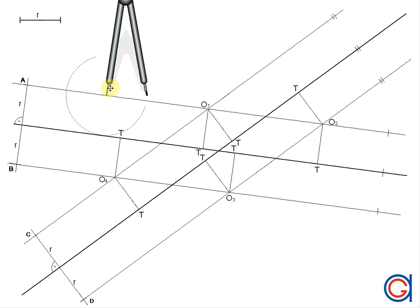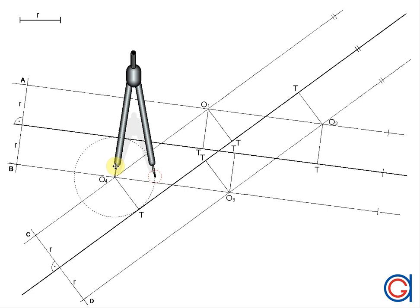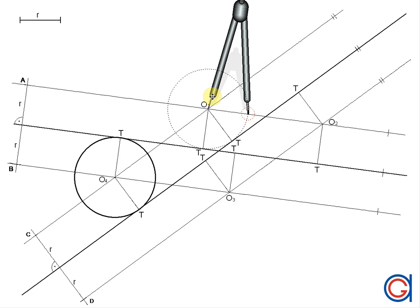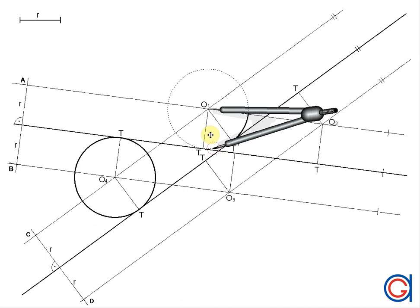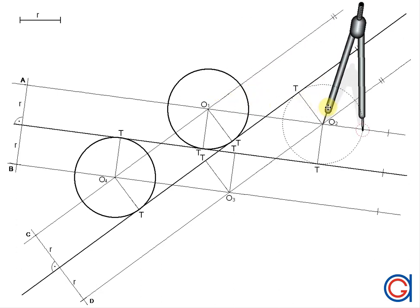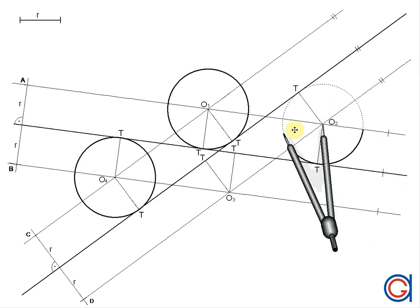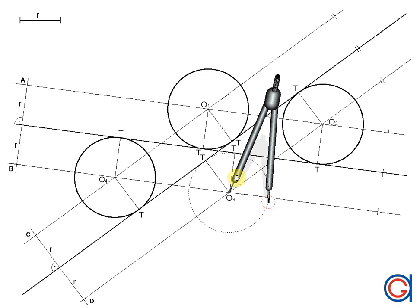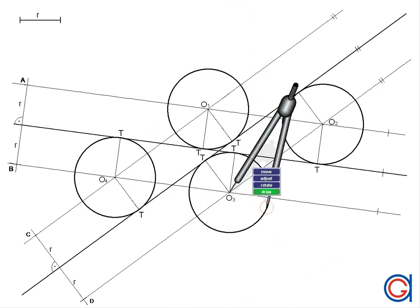Now, setting our compass to the given length r and placing it on center O1, we draw the first circle in a thicker line. If we have been working with precision and accuracy, this circle should pass through the two tangent points, as can be seen here. We continue this process for the other three centers: setting our compass on O2, we scribe another circle which cuts the two tangent points. With the third center O3 and radius r, we scribe our third circle. And finally, the fourth circle, setting on center point O4, cutting the two tangent points as can be seen.